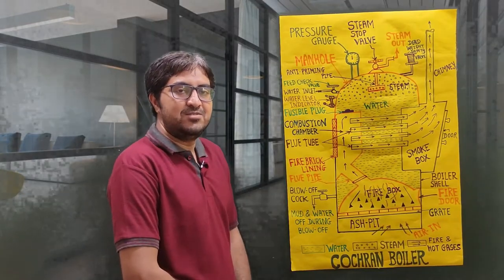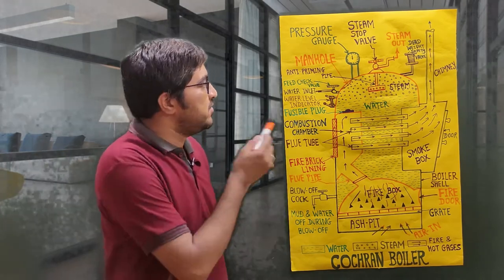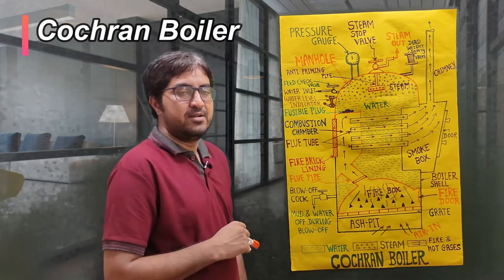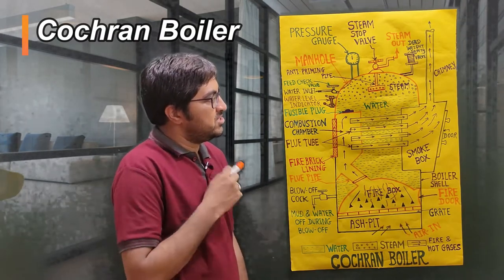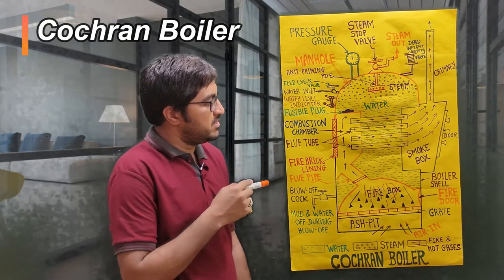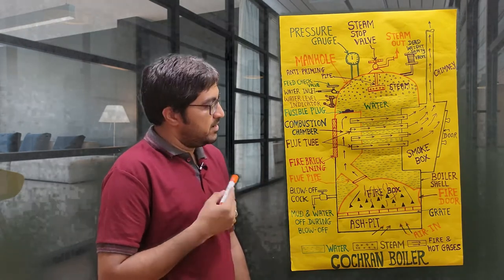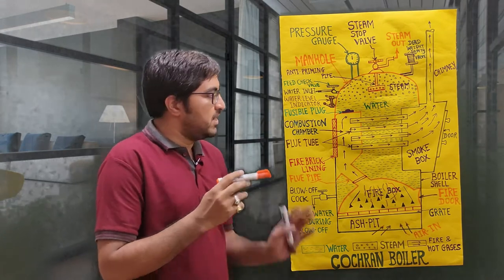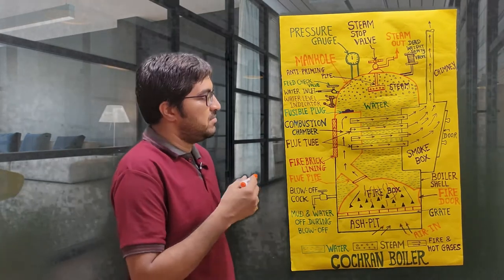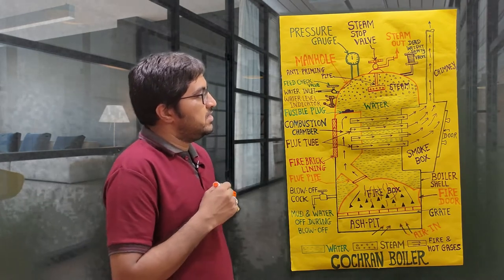Hi guys, this is Vijay. In this video lecture we will discuss the working principle of the Cochran boiler. The characteristics of this boiler are: it is a vertical boiler, it is an internally fired boiler, it is a stationary boiler, and it uses a number of tubes, making it a multi-tubular boiler.